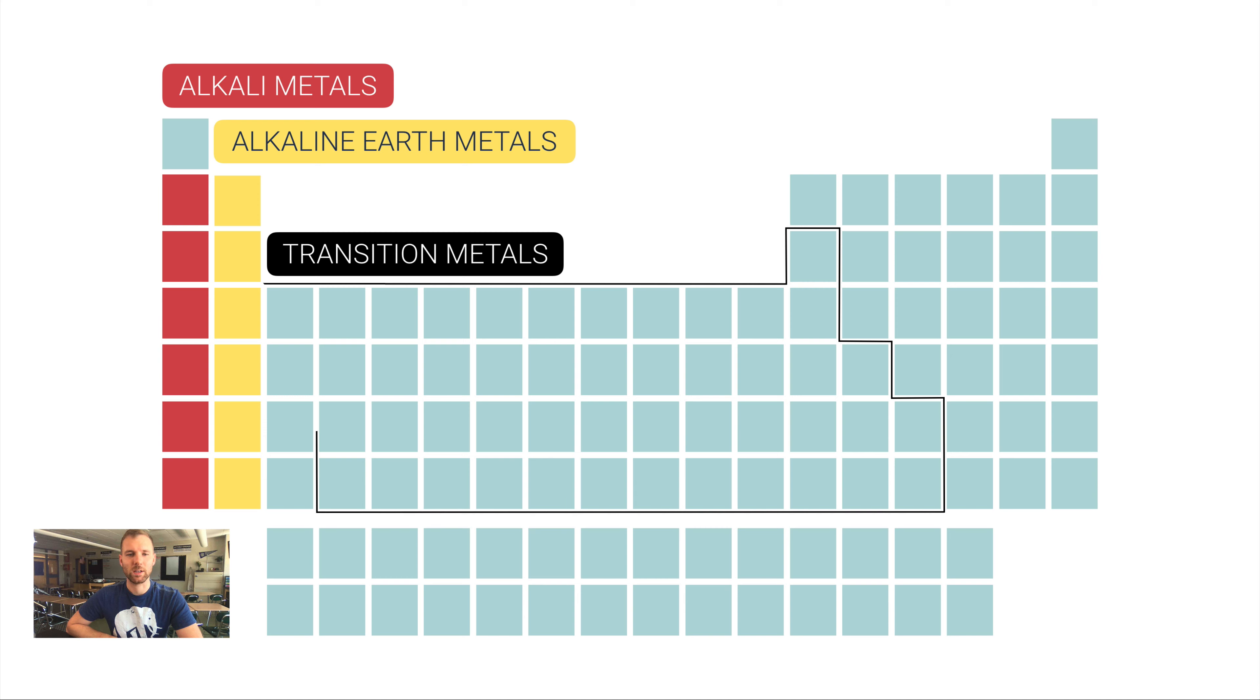In this middle section here we've got transition metals, which do some funky things. This section we talked about just on the last slide: there are metalloids. Sometimes they exhibit properties of a metal, sometimes they're more like a non-metal, so it really depends on the circumstances of temperature and pressure.